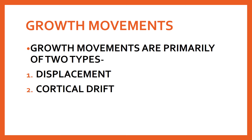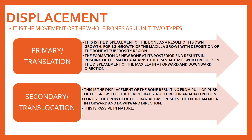The third mechanism is growth movements, of two types: displacement and cortical drift. Displacement is the movement of the whole bone as a unit. There are two types: primary (translation) and secondary (translocation). Primary displacement is displacement of the bone as a result of its own growth. For example, in maxilla growth, new bone formation at the tuberosity region pushes the maxilla against the cranial base, displacing the maxilla in a forward and downward direction.